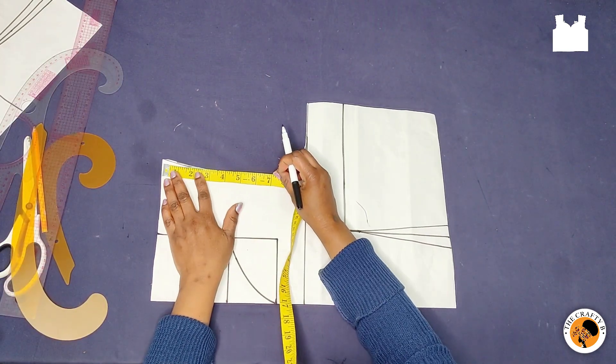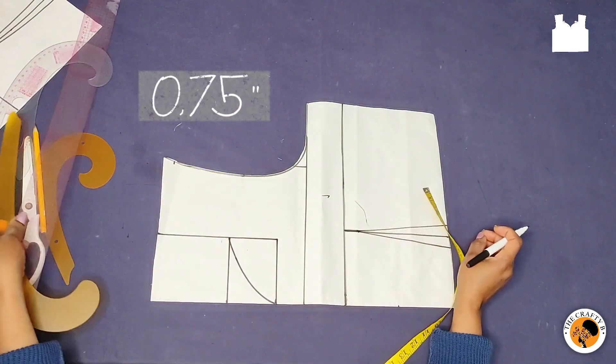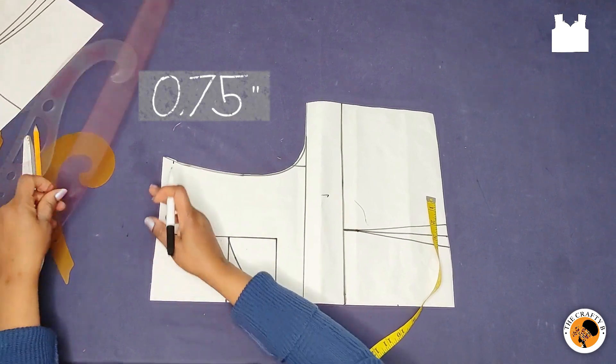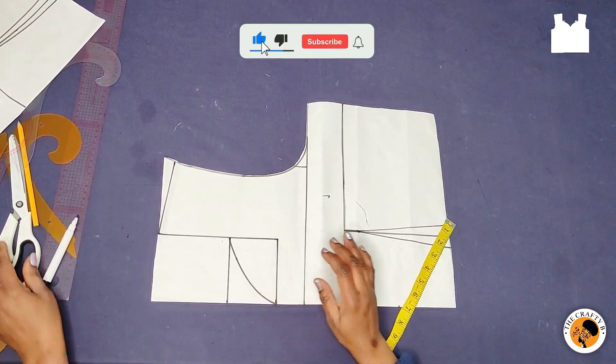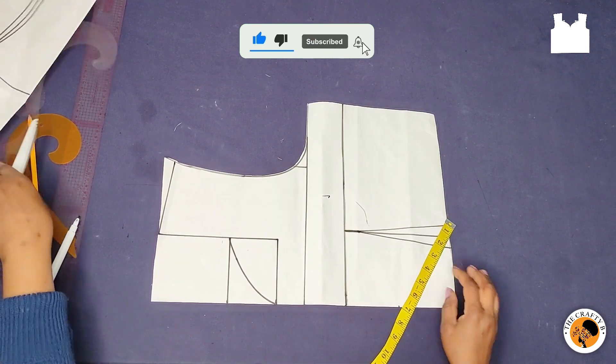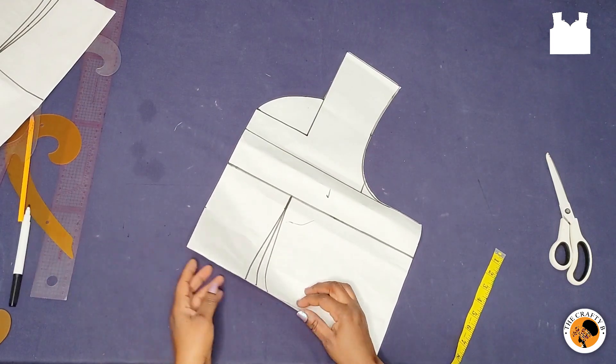Next I'll be taking 0.75 or you can go one inch for the shoulder slope and I'll connect it to the neck points. So this is our sweetheart neckline. I'll go ahead and cut it out.